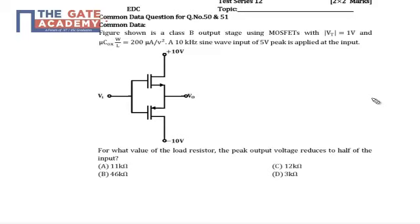The question says that we have actually applied one load across the output. We have connected the load here, RL. For what value of RL does my peak output voltage reduce to half of the input?